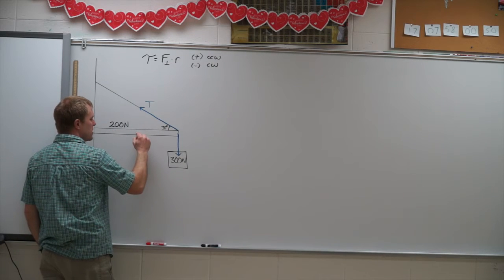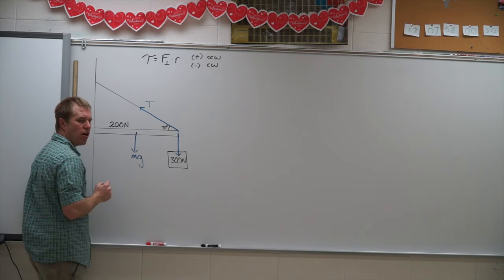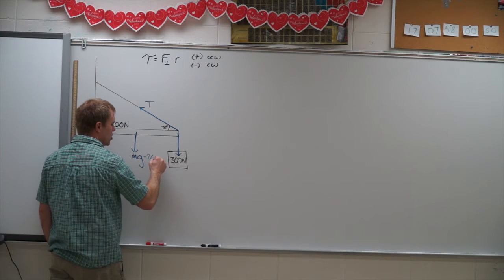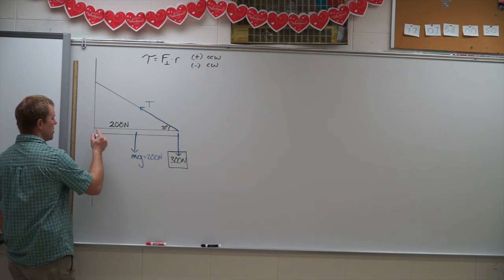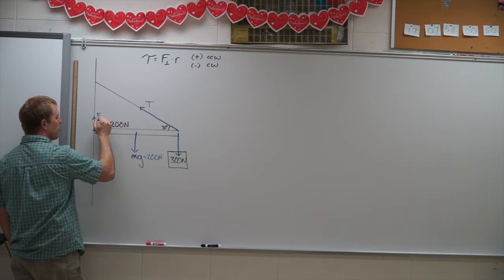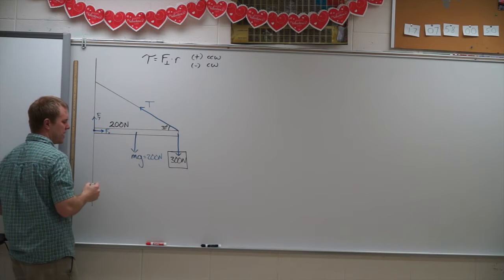So this 200 Newtons is located at the center of mass. So I draw the Mg of an object at its center. In this case it's 200 Newtons for its weight. Now there are a couple more forces here. The wall, it's hinged at my wall. So the wall is holding it up with some force Fy and holding it out with some force Fx.